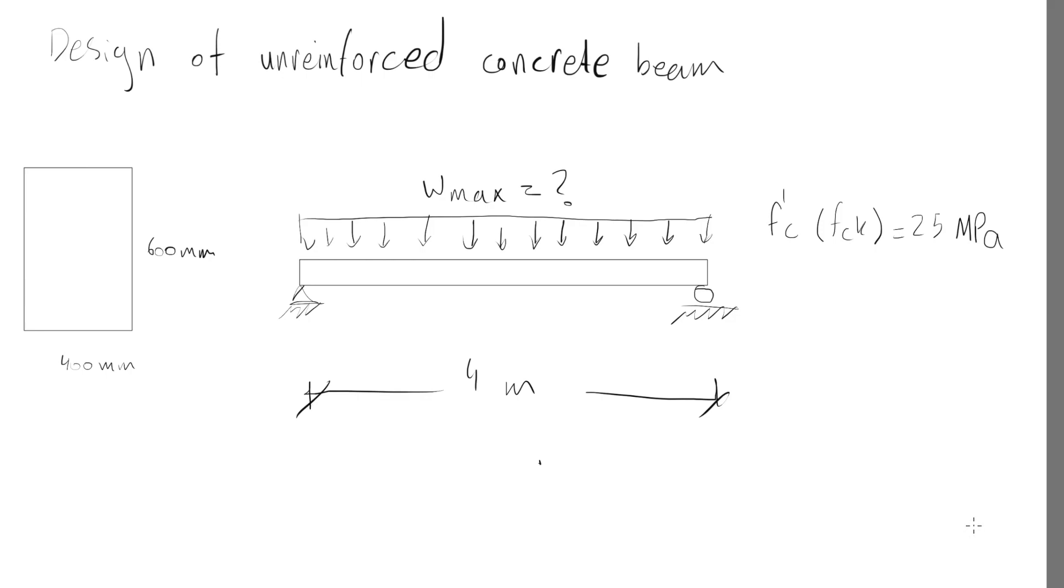In this video I will talk about design of unreinforced concrete beam. For this example we have a beam with a span of 4 meters and a cross-section of 400 millimeters by 600 millimeters with a compressive strength of 25 megapascals, and we are trying to find the maximum applicable distributed load without letting the member fail.